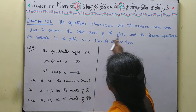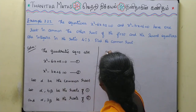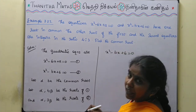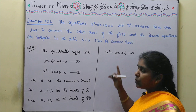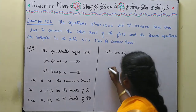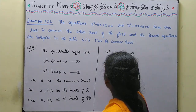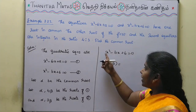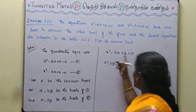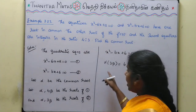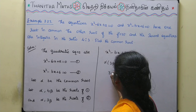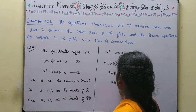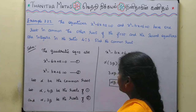For the second equation, the product of roots equals c divided by a, which is 6. So alpha times 3 beta equals 6, which gives us alpha times beta equals 2.